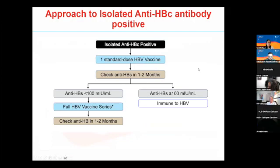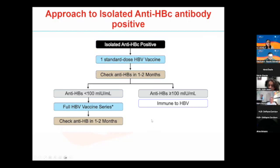For someone with a positive hep B core antibody but negative surface antigen and surface antibody, this could indicate a false positive, waned antibodies from prior infection, or occult hepatitis B. The approach is to give one single dose of a hep B vaccine, check titers in one to two months, and look for a tenfold greater result — that threshold is 100, not the 10 used otherwise. If greater than 100, the patient is immune; if less than 100, revaccinate with a full hepatitis B series.